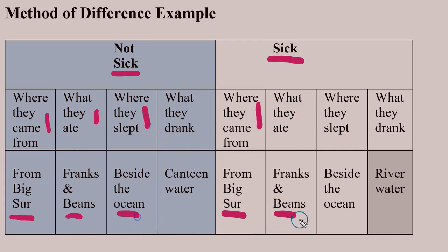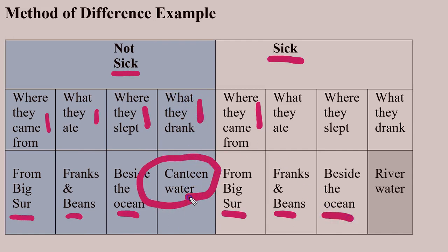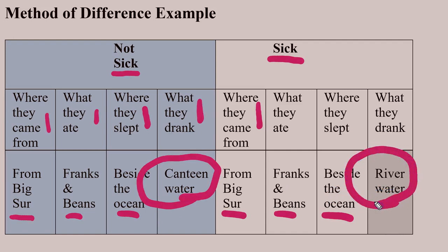beside the ocean — the same spot. What did they drink? Canteen water for those who did not get sick, river water for those who did. Looks like the river water is a likely cause of the illness.